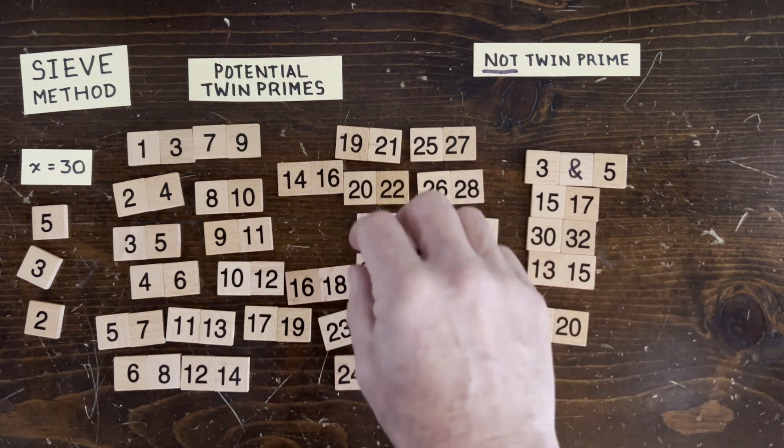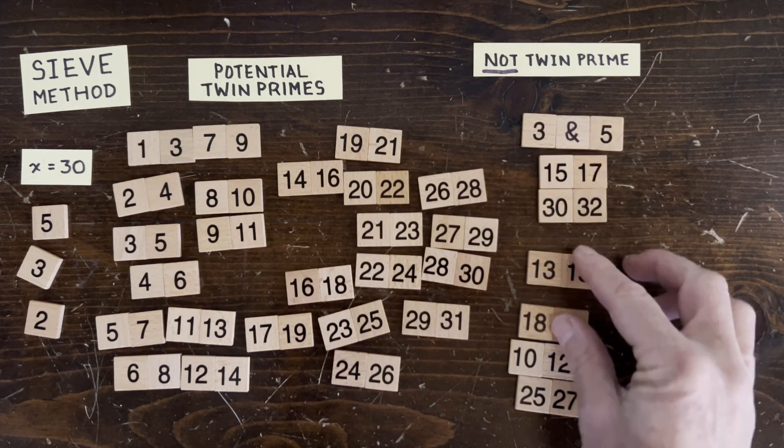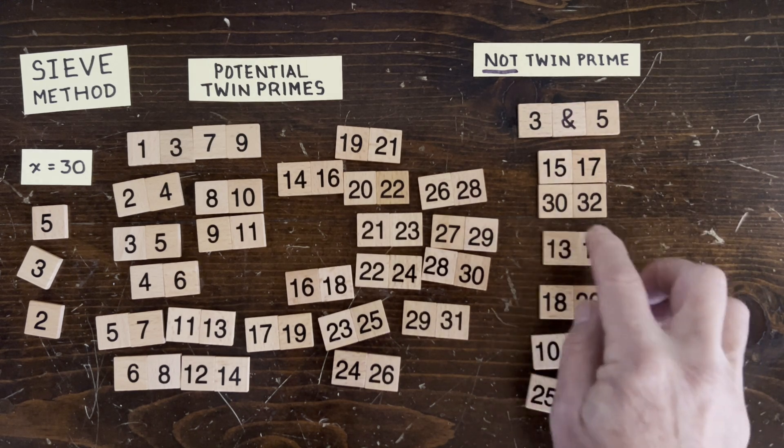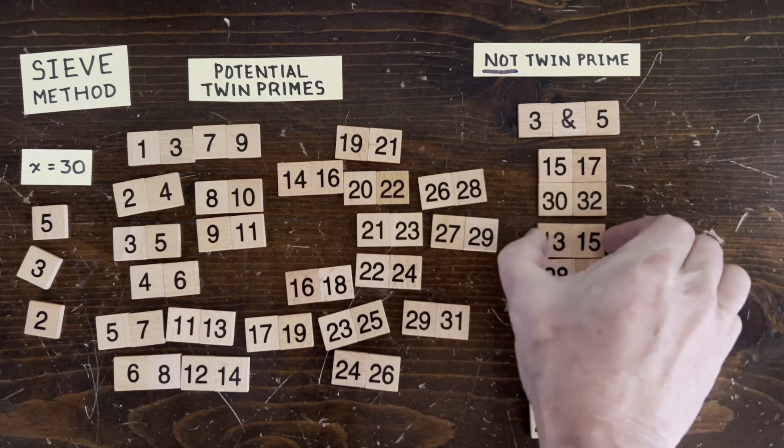Okay, so these are all the pairs that come out with 3, with 5, and with both 3 and 5. So let's take a look at the intersection. Anything where the first number is divisible by 15, like 15, 17, and 30, 32.